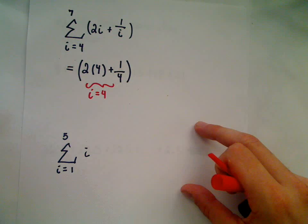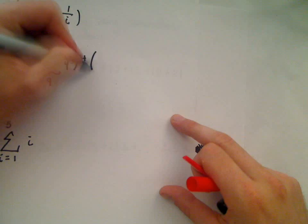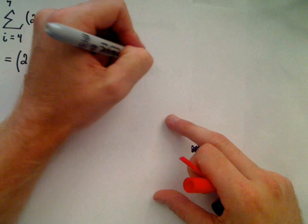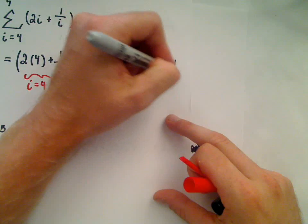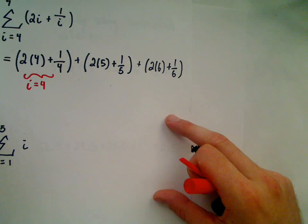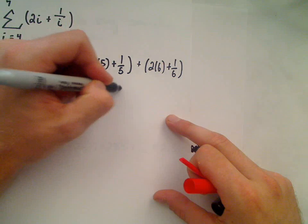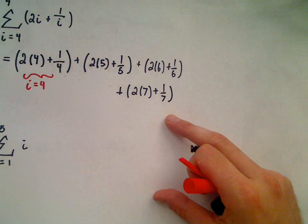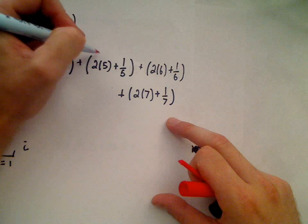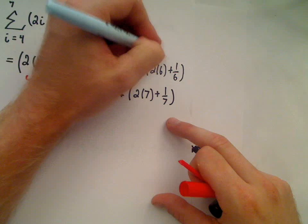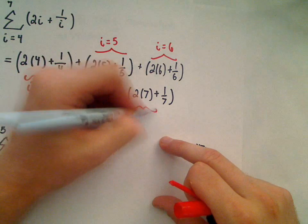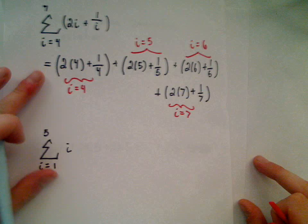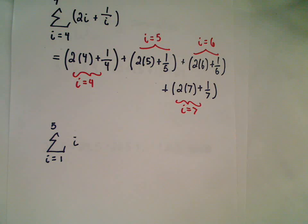And then I have to keep going. I'll plug in i equals 5, plug in i equals 6, and we'll keep doing this until we plug in 7. So my last term will be 2 times 7 plus 1 over 7, and that'll be your sum. So the second part corresponds to i equals 5, i equals 6, and lastly i equals 7. I'm going to be lazy and not do the arithmetic on this one. I'm mainly just trying to show you how things fit in.